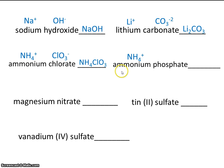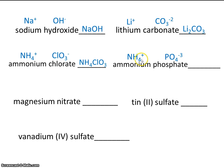Now let's try ammonium with phosphate. Phosphate is PO₄ minus 3. Using the zigzag method, we bring the 3 down to indicate 3 ammoniums. Some students write NH₄3, but that incorrectly implies 1 nitrogen and 43 hydrogens. What we want to show is 3 ammoniums, so we write (NH₄)₃ with parentheses, indicating 3 ammoniums, plus 1 phosphate.